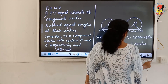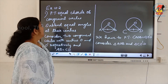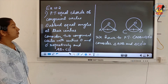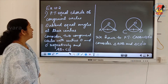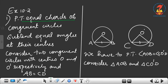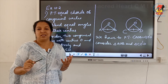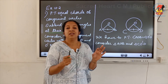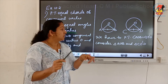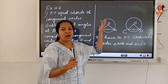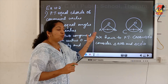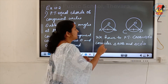Exercise 10.2, Question 1: Prove that equal chords of congruent circles subtend equal angles at their centers. Unlike the previous theorem which used one circle, here we consider two congruent circles.